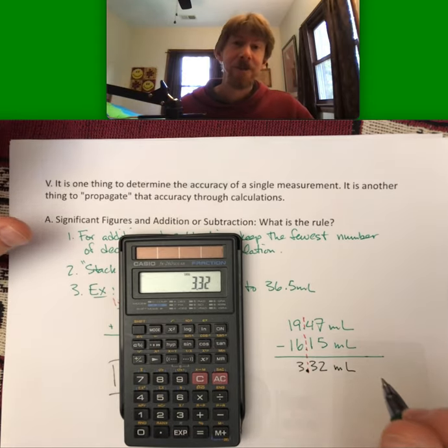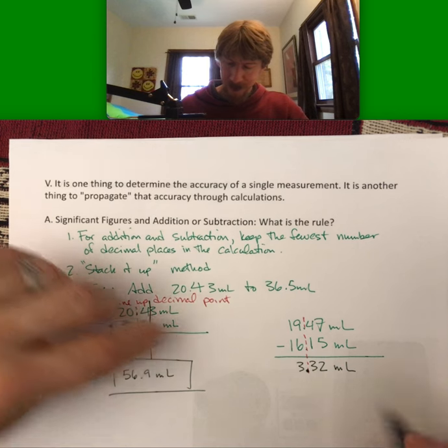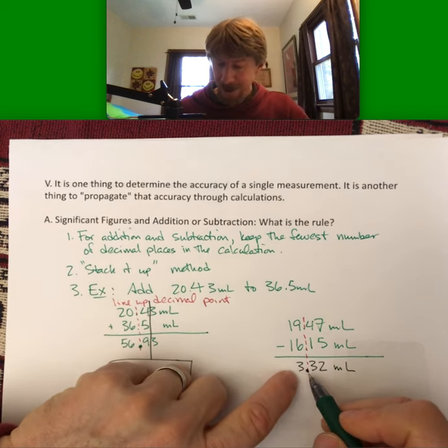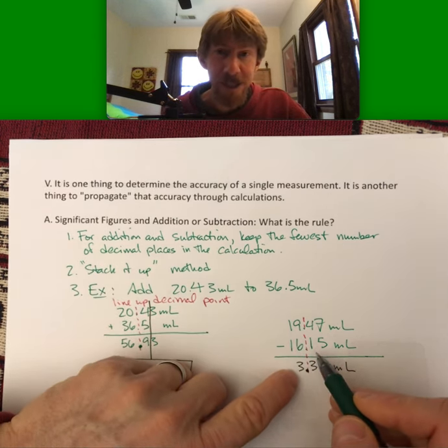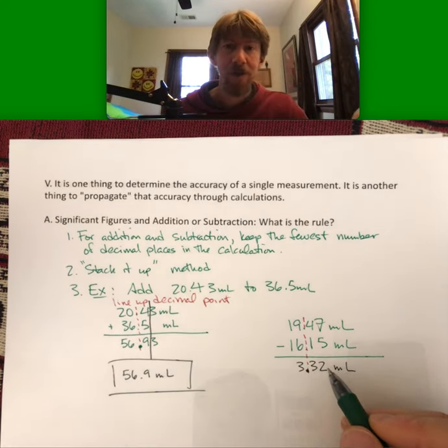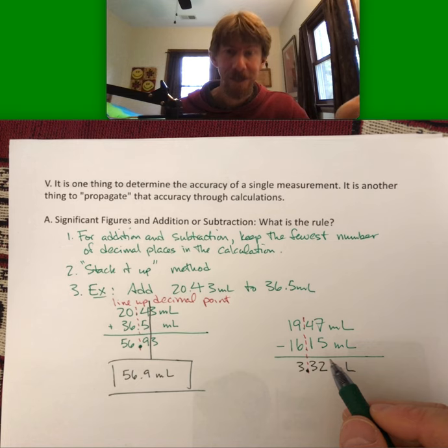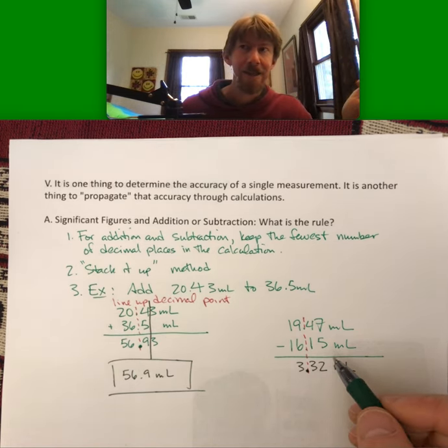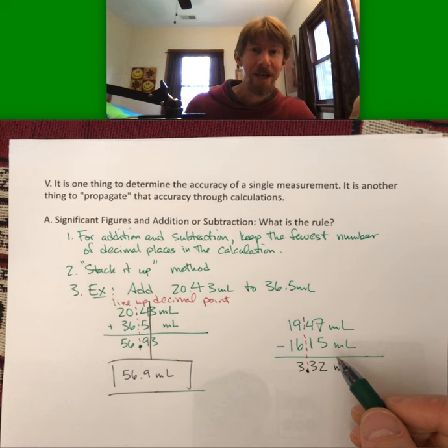And what's interesting about this, and this can happen for addition as well, for subtraction, both of our numbers had four sig figs. And our answer only has three sig figs. So we've lost the sig fig due to calculations or due to propagating the accuracy through calculations.